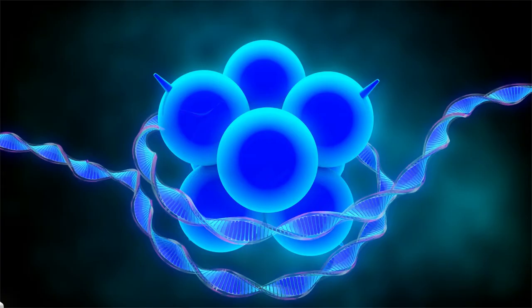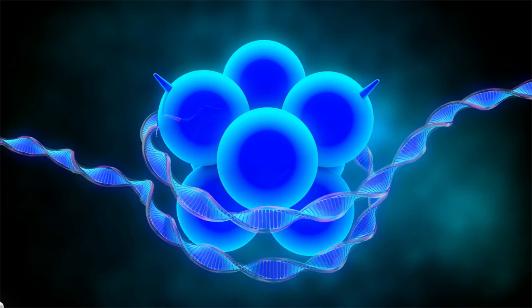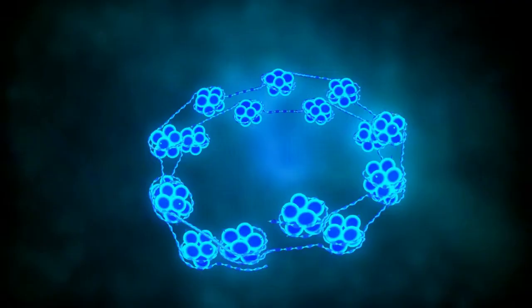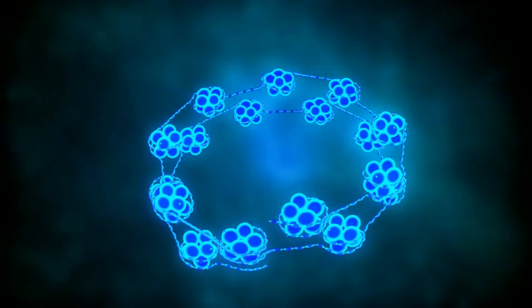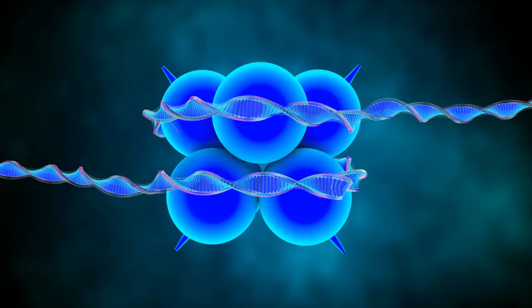A histone octamer consists of eight histone proteins. When DNA is tightly wrapped around histones, genes become inaccessible and cannot be read or expressed.